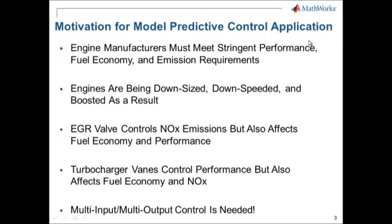For the motivation for using model predictive control, it's well known that engine manufacturers must meet stringent performance, fuel economy, and emissions requirements. To meet those, they're downsizing, down-speeding, and boosting their engines, which allows them to use smaller engines at higher power density and lower brake-specific fuel consumption. They'll typically add an EGR valve which recirculates exhaust gas back to the intake system to cool the mixture and decrease NOX emissions, but that also affects fuel economy and performance.